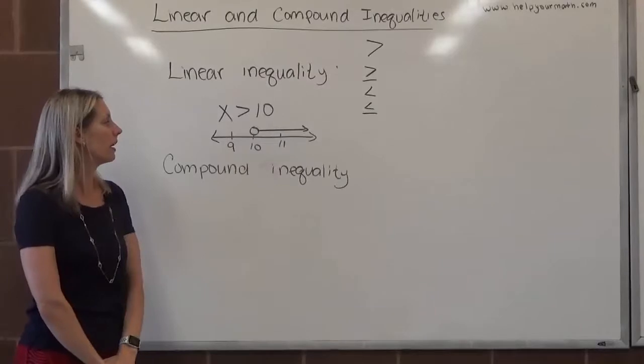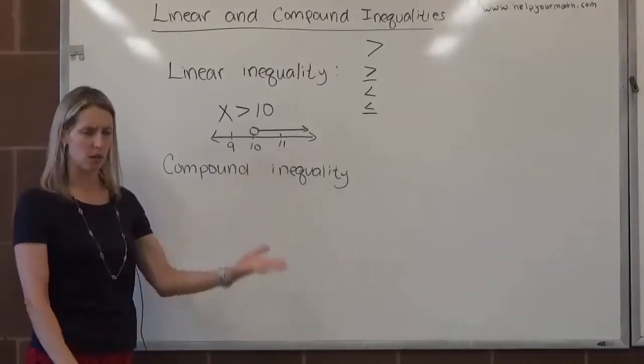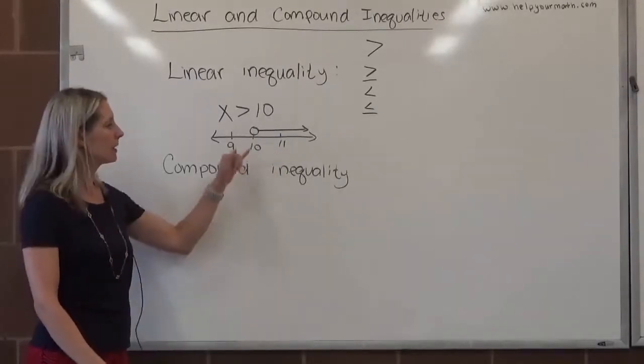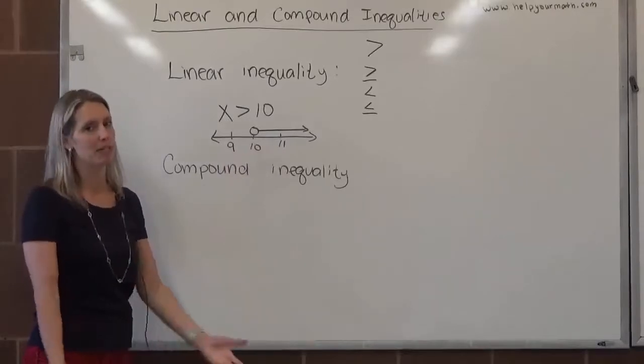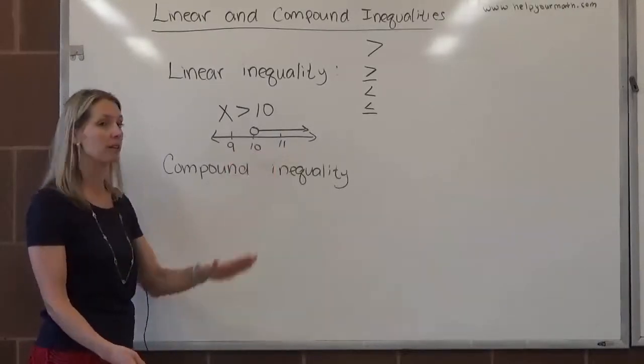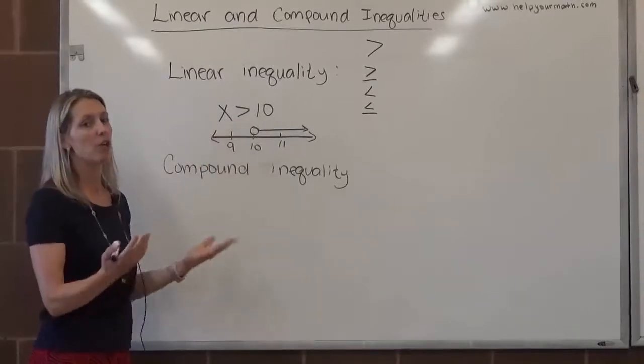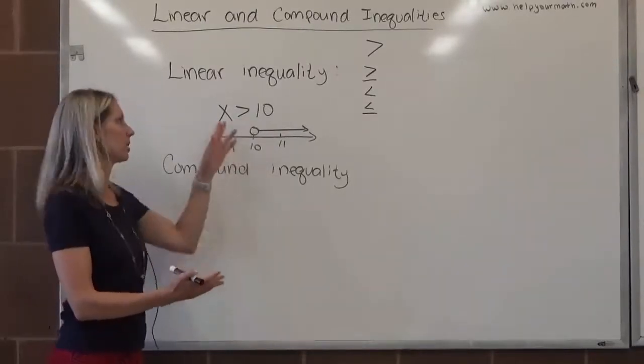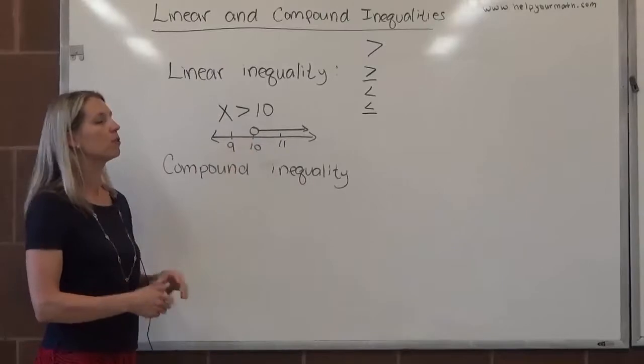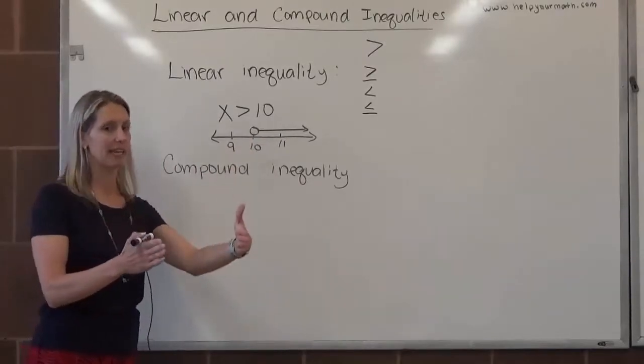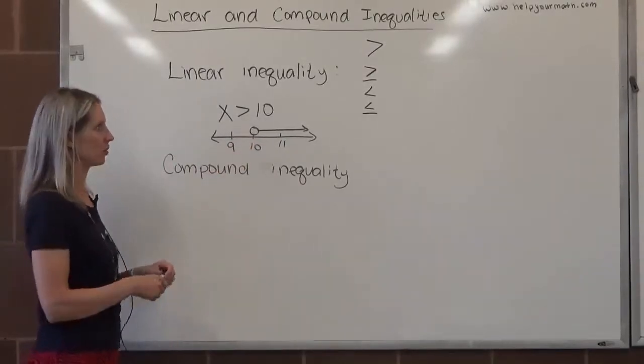Now, we use an open circle. I have students who say, well, why don't we just use a closed circle at 11? Because there's infinitely many solutions between 10 and 11. If you start at 11, you're not including 10.1, which is a solution here, or 10.05, which is a solution. That's why we use an open circle instead of just going to the next integer, because the solutions don't have to be integers.